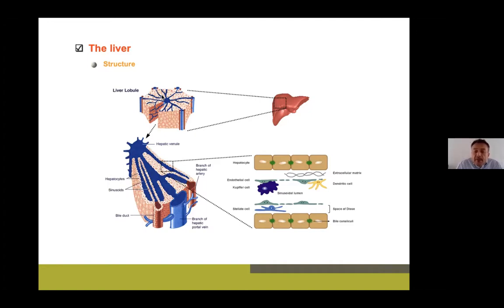There are also important non-parenchymal liver cell types: endothelial cells lining the sinusoid, creating the space of Disse where most extracellular matrix components reside; Kupffer cells and dendritic cells with immunological functions; and stellate cells residing in the space of Disse, which normally store vitamin A but in fibrosis adopt a different phenotype, losing their vitamin A content and producing excessive amounts of extracellular matrix components.